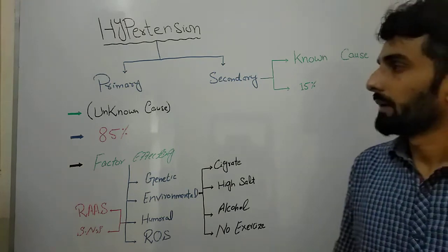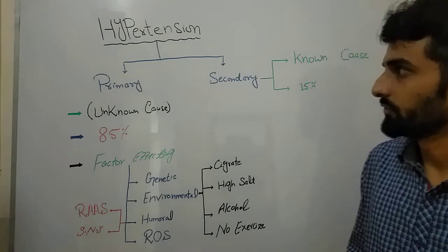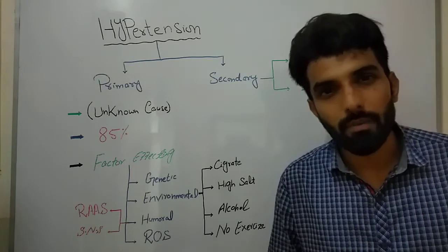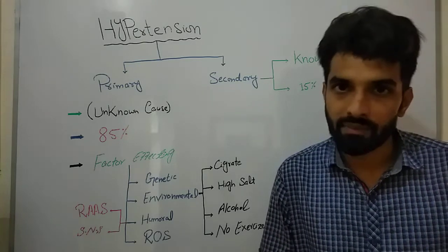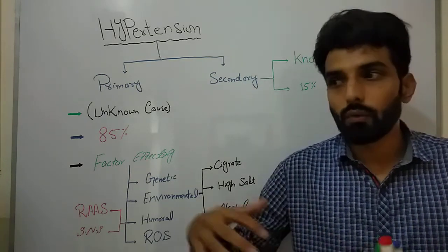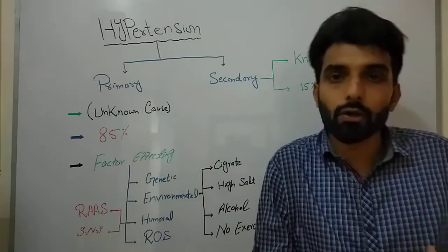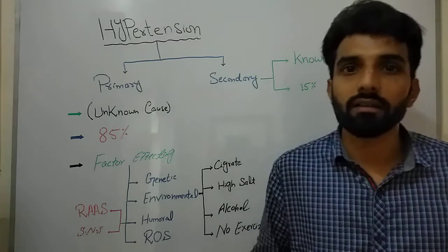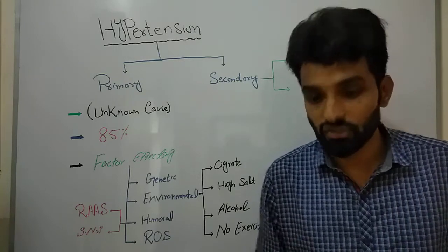We are talking about the pathophysiology of hypertension. Let's discuss some important types: primary hypertension and secondary hypertension. Primary hypertension has no specific or known cause, while secondary hypertension has a specific cause — for example, renal stenosis — that ultimately leads to hypertension. Primary hypertension has no secondary reason and is also called essential hypertension.